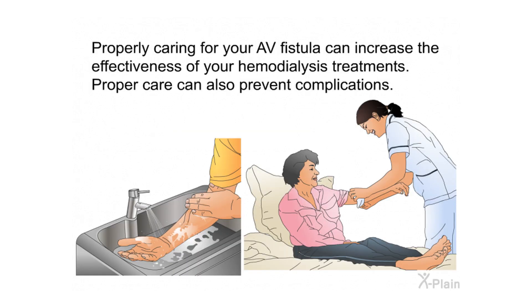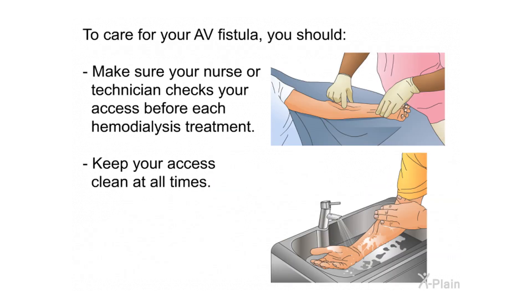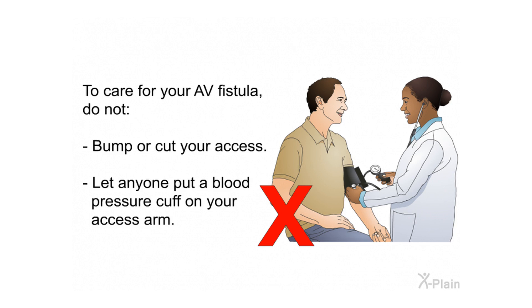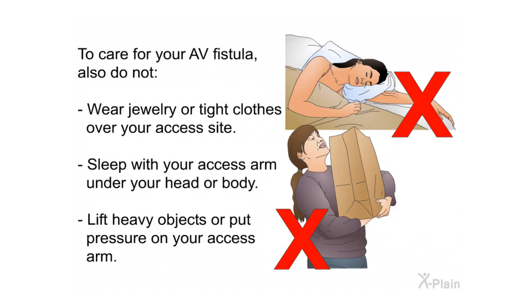AV Fistula Care. Properly caring for your AV fistula can increase the effectiveness of your hemodialysis treatments and prevent complications. To care for your AV fistula: make sure your nurse or technician checks your access before each hemodialysis treatment; keep your access clean at all times; use your access site only for dialysis; and check the pulse in your access every day. Do not bump or cut your access, and do not let anyone put a blood pressure cuff on your access arm. Also do not wear jewelry or tight clothes over your access site, sleep with your access arm under your head or body, lift heavy objects, or put pressure on your access arm.